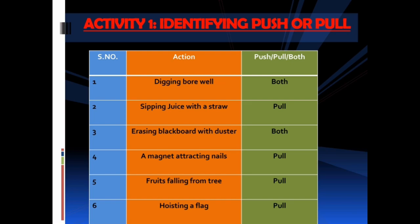Activity 1: Identifying push or pull. 1. Digging a bore well — Both, as the action involves both push and pull. 2. Sipping juice with a straw — Pull. 3. Erasing a blackboard with a duster — Both, since this action involves push and pull. 4. A magnet attracting nails — Pull, since the magnet pulls the nails. 5. Fruits falling from a tree — Pull, since the earth attracts the fallen fruits. 6. Hoisting a flag — Pull, as we pull the rope.